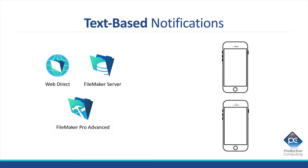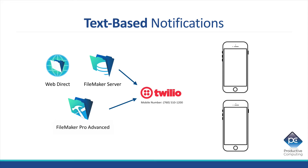The problem is, field personnel may or may not be running FileMaker Go — that's the first problem. Second, you want to make sure the notification goes to the right field personnel. Here at Productive Computing, we've solved that for our vertical market as well as custom solutions using a service called Twilio. Twilio is a text notification service where you take a FileMaker record, create a script, tell Twilio the number you want to send the information to, queue up a text message for that number, and Twilio does the rest.